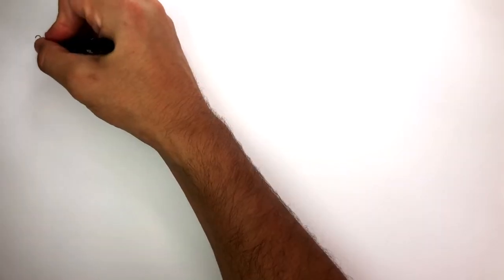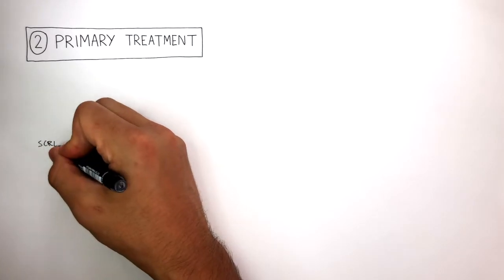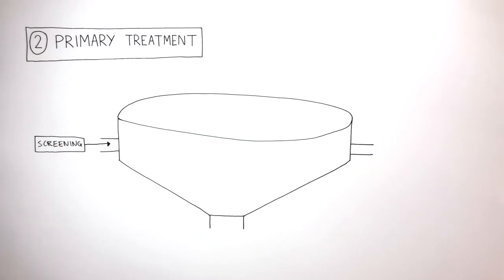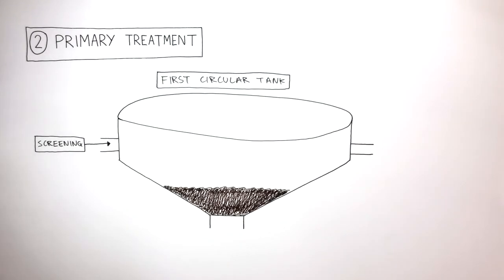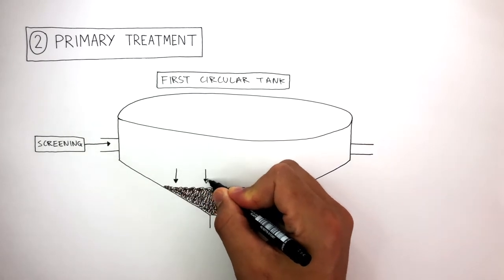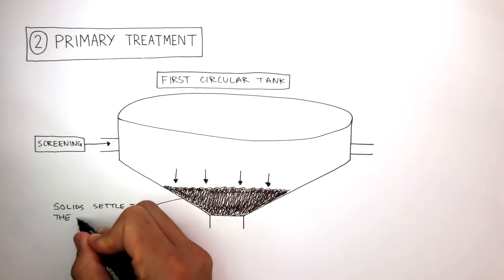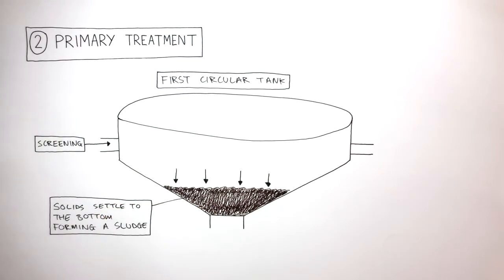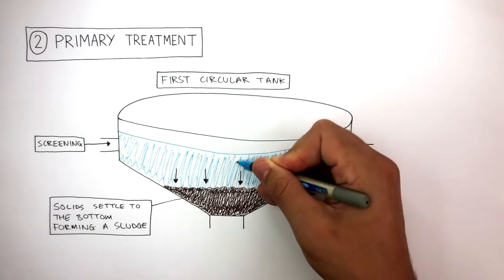The next step is primary treatment. The sewage flows from screening into this tank known as the first circular tank. Sludge forms at the center of the tank as the solid sediments settle to the bottom, and above this sludge is a watery liquid known as effluent.